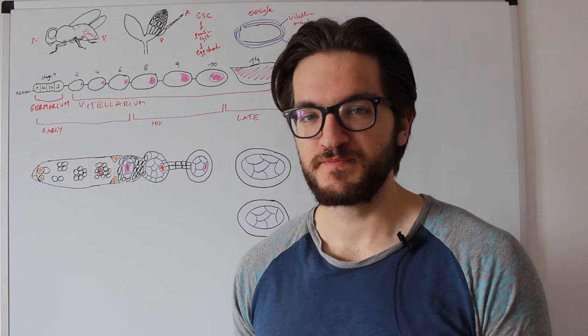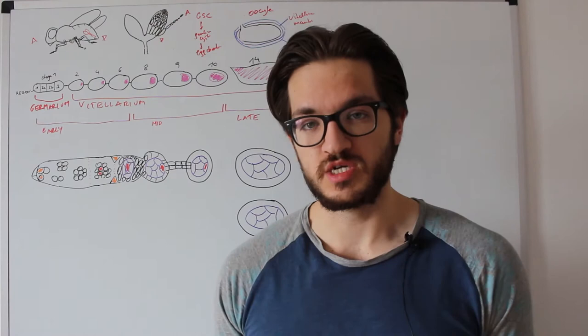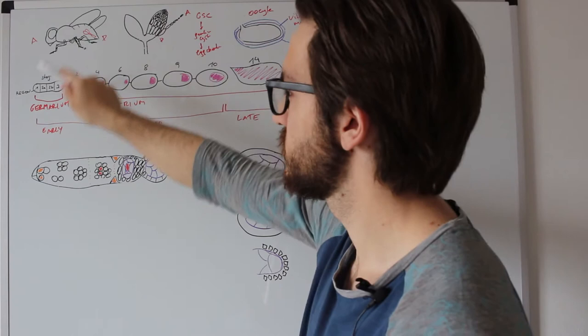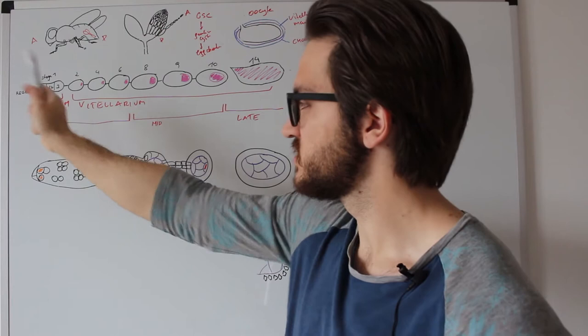Having explained the basic terminology, we can now discuss what occurs within the ovariole before we go on to how it occurs. We'll start with the very anterior end, the germarium, stage 1, in region 1. I have drawn it here a little bit bigger: region 1, 2a, 2b, and region 3 together make up stage 1 or germarium, while stage 2 begins here.